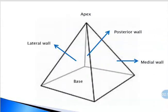In this picture we can see the pyramidal shape of the axilla. In the pyramid there is one apex, one base, and four walls — the medial and lateral walls, and the posterior and anterior walls.